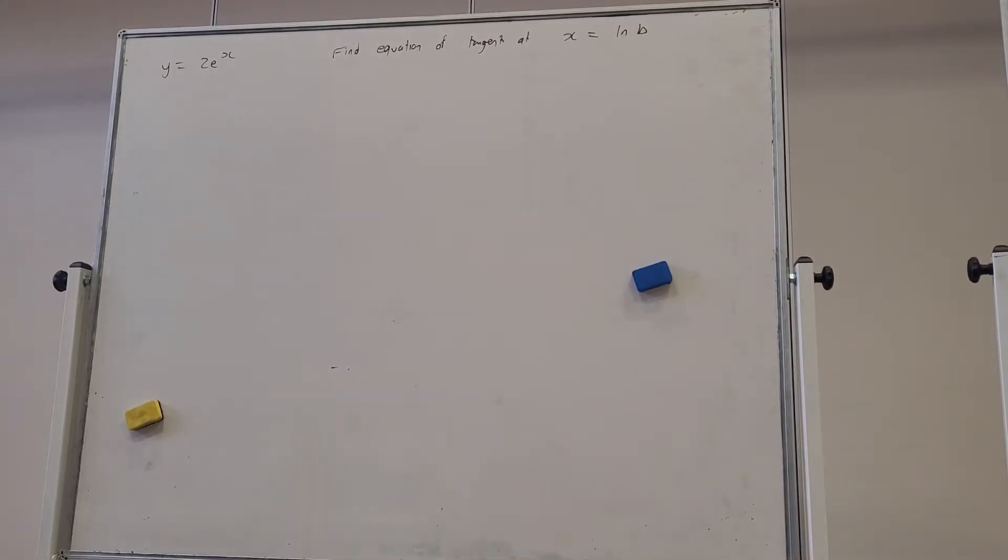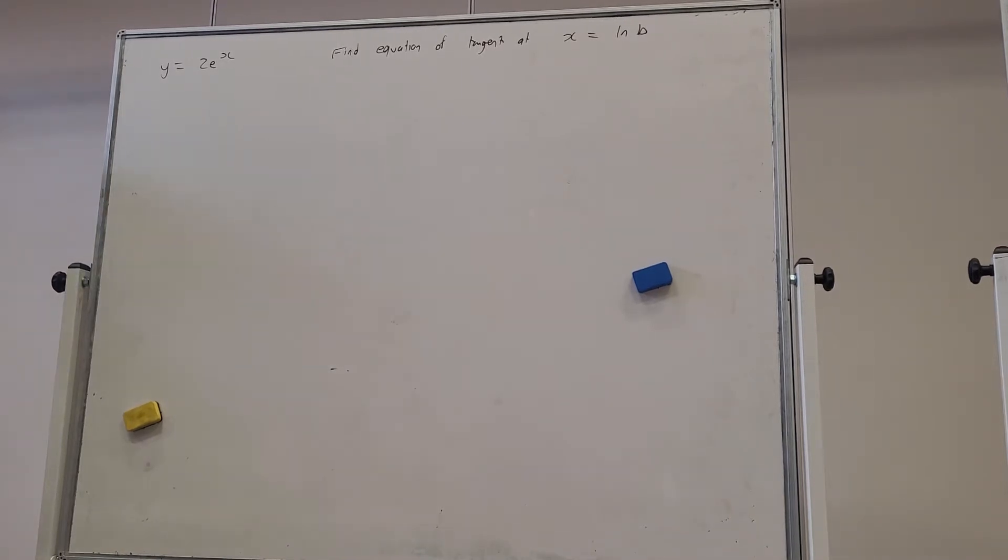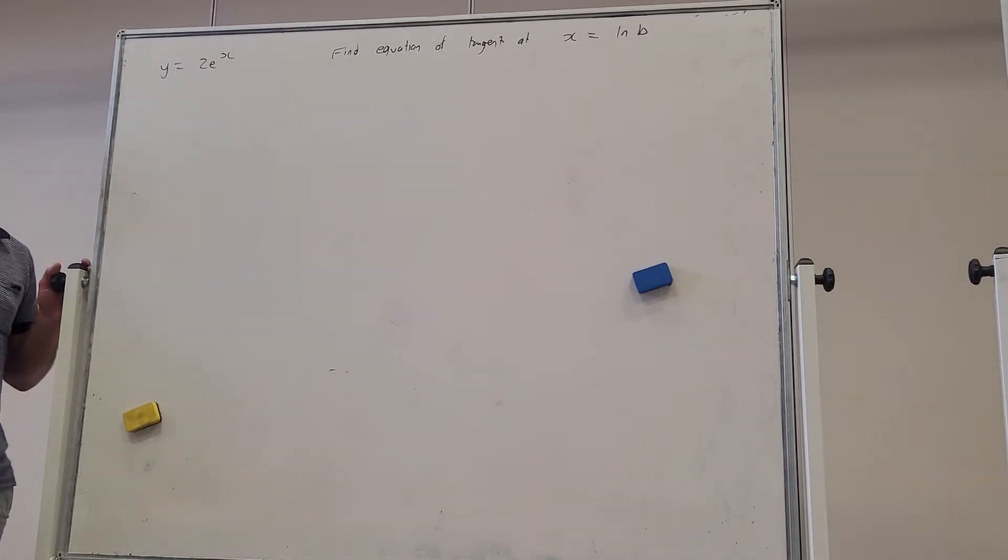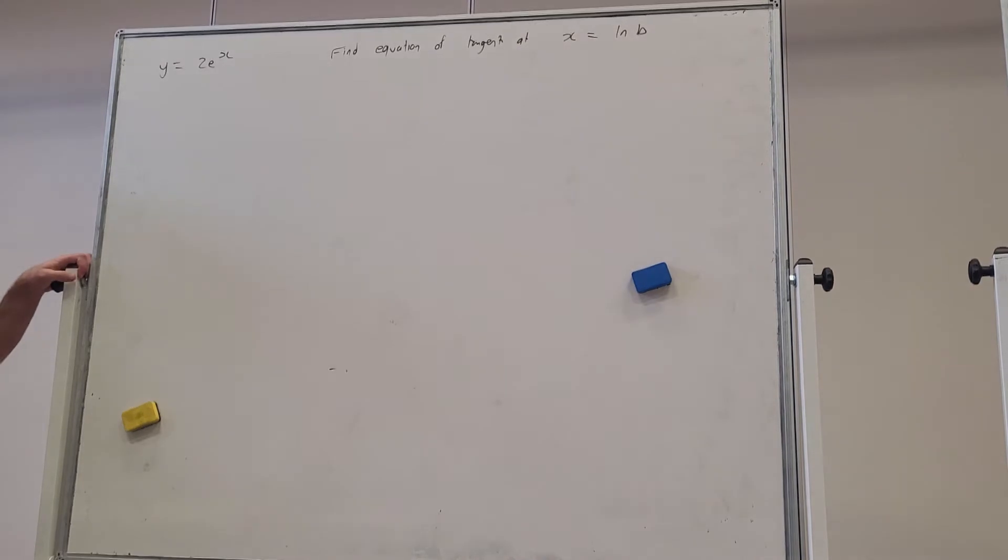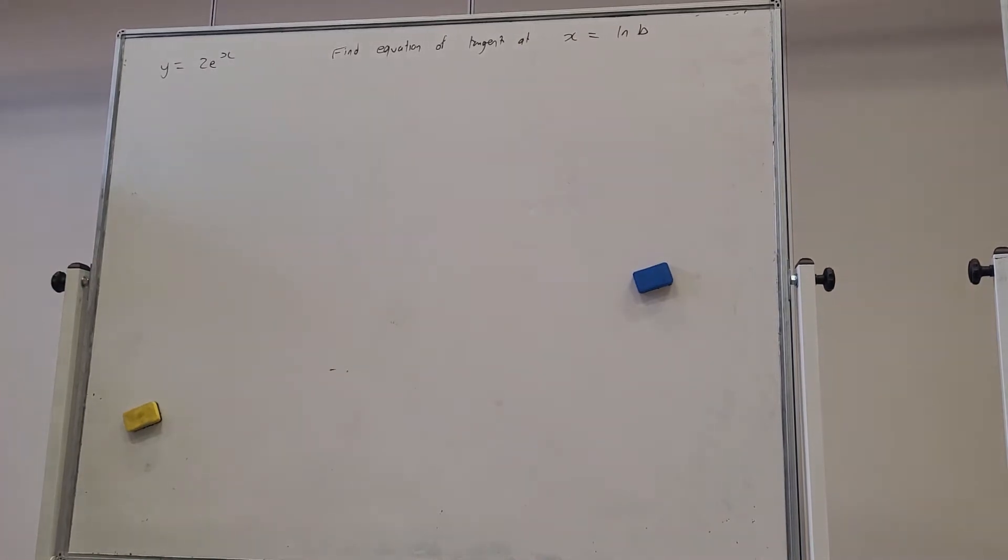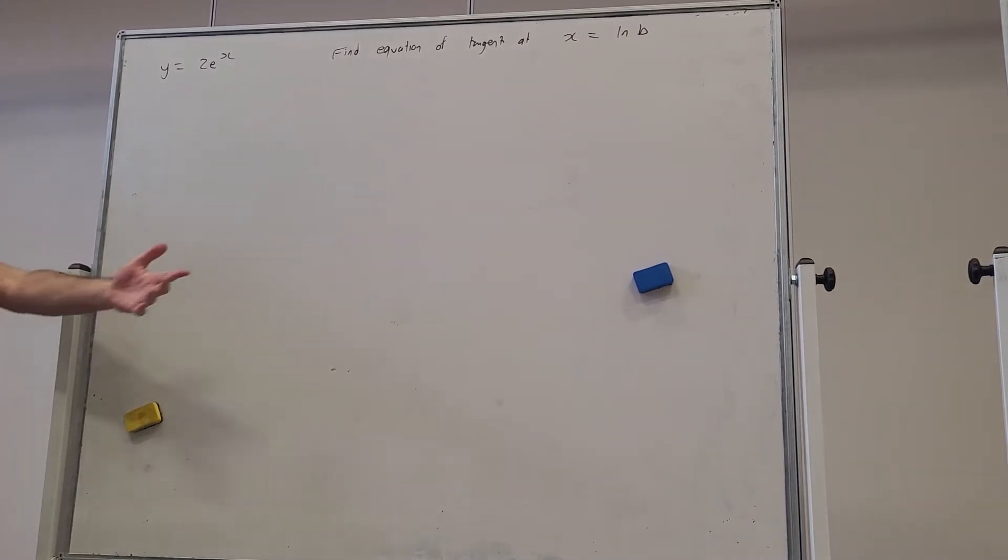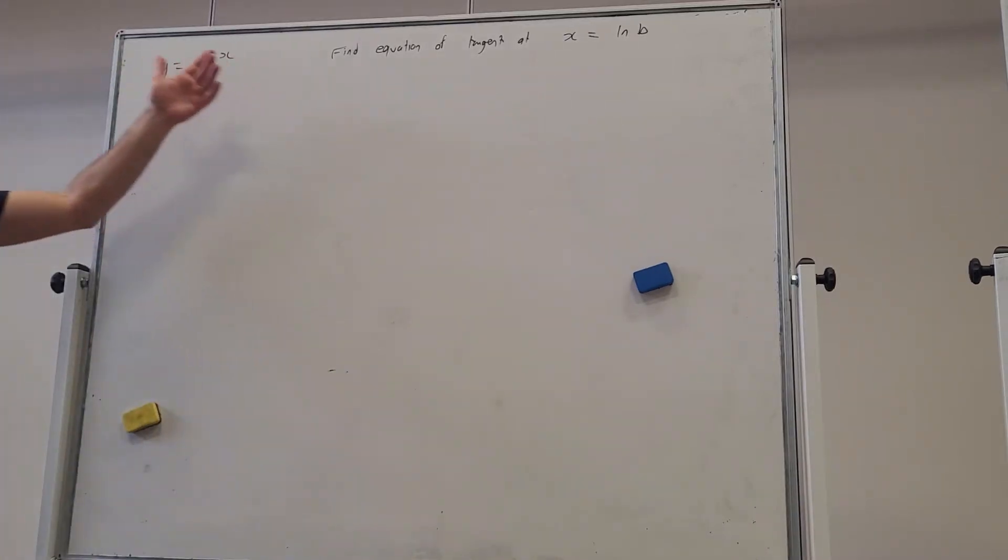So here we are. We've got y = 2e^x and it says find the equation of the tangent at x = ln b. So it doesn't give us a number, but that's okay. We're going to find the equation of the tangent in terms of ln b and the function.